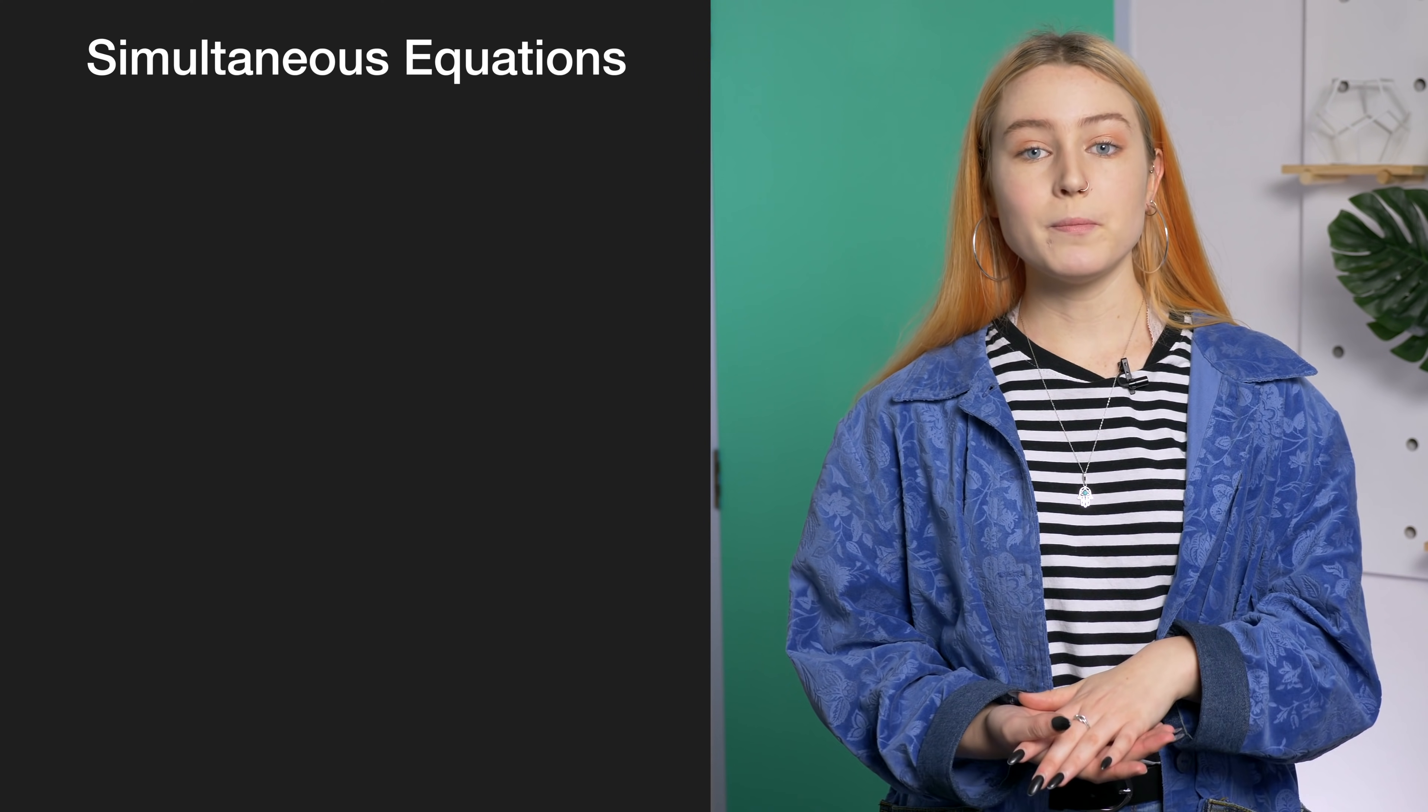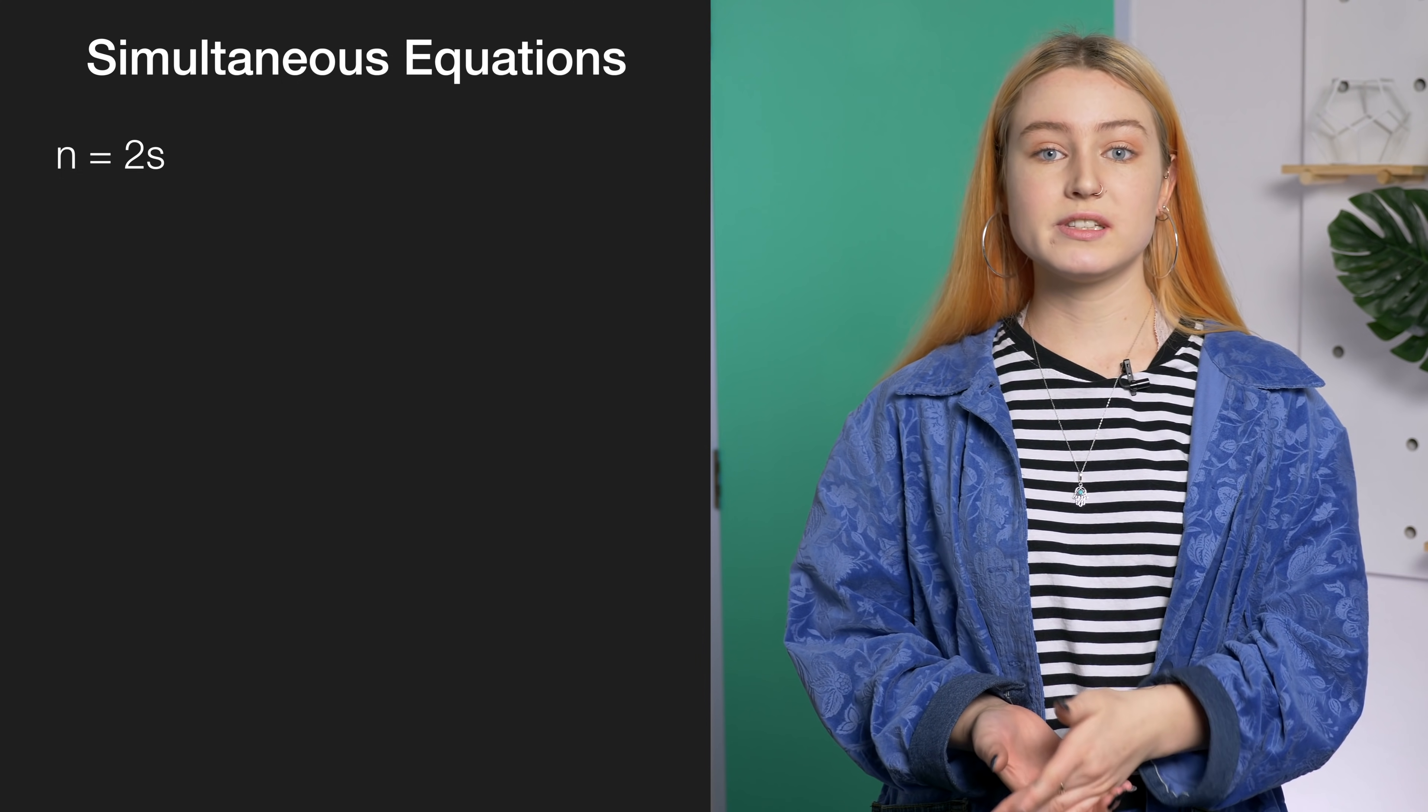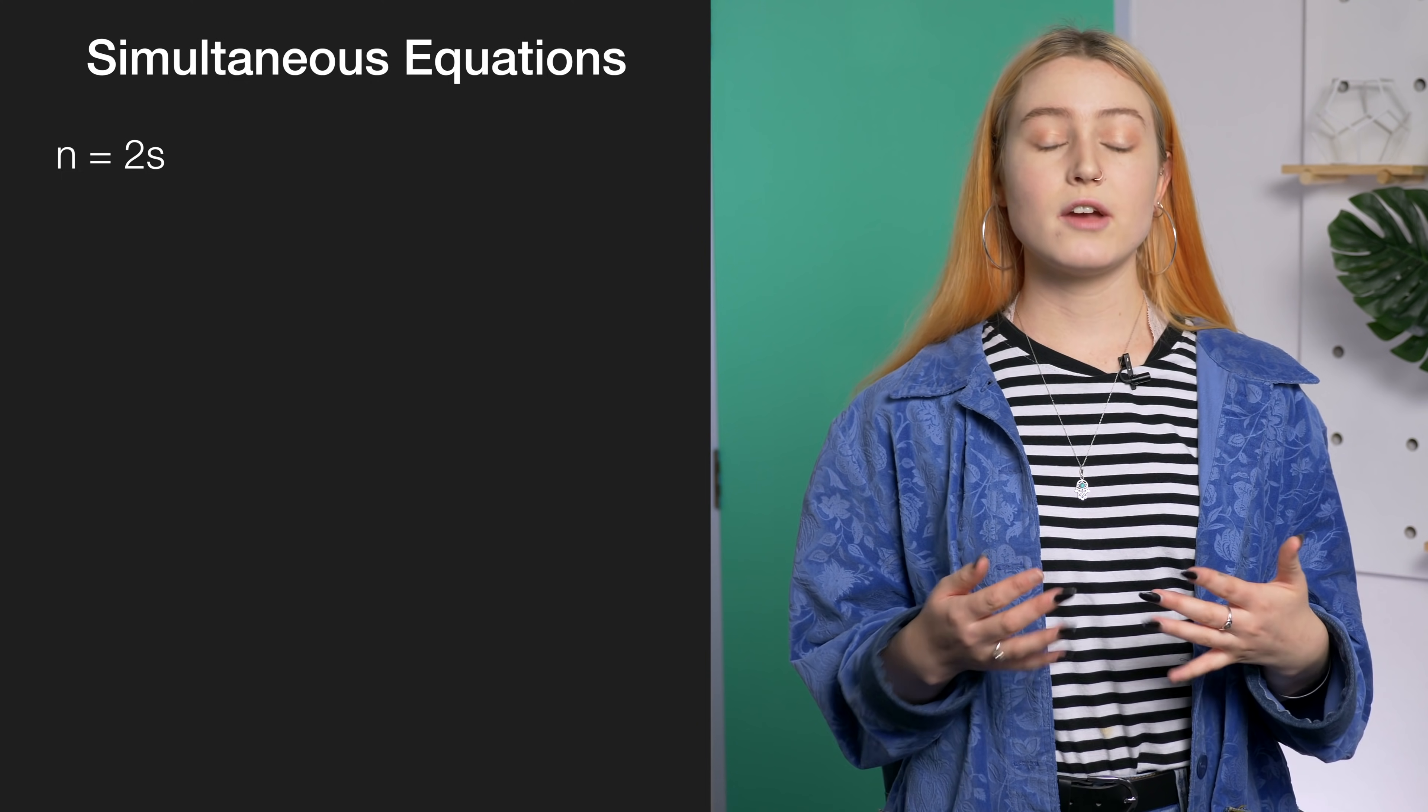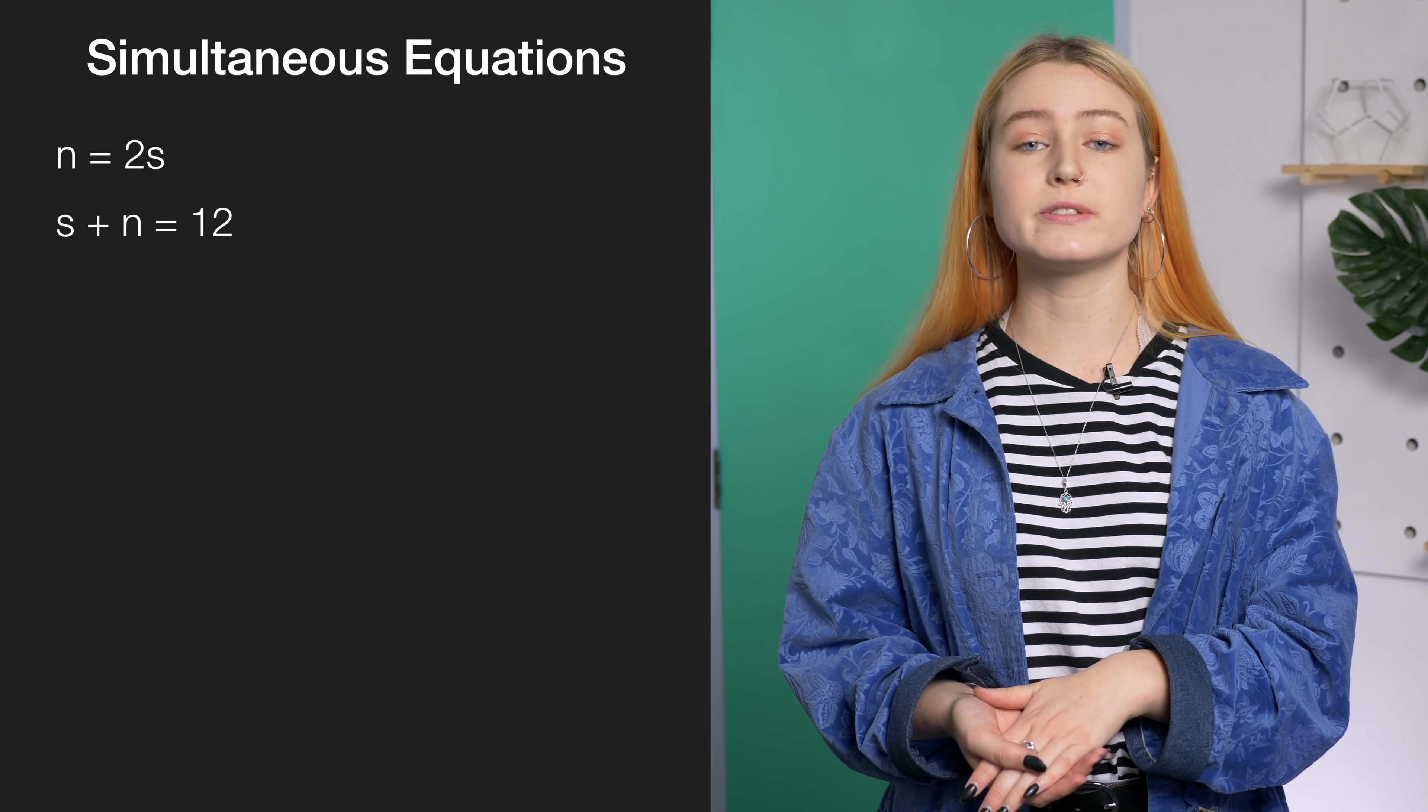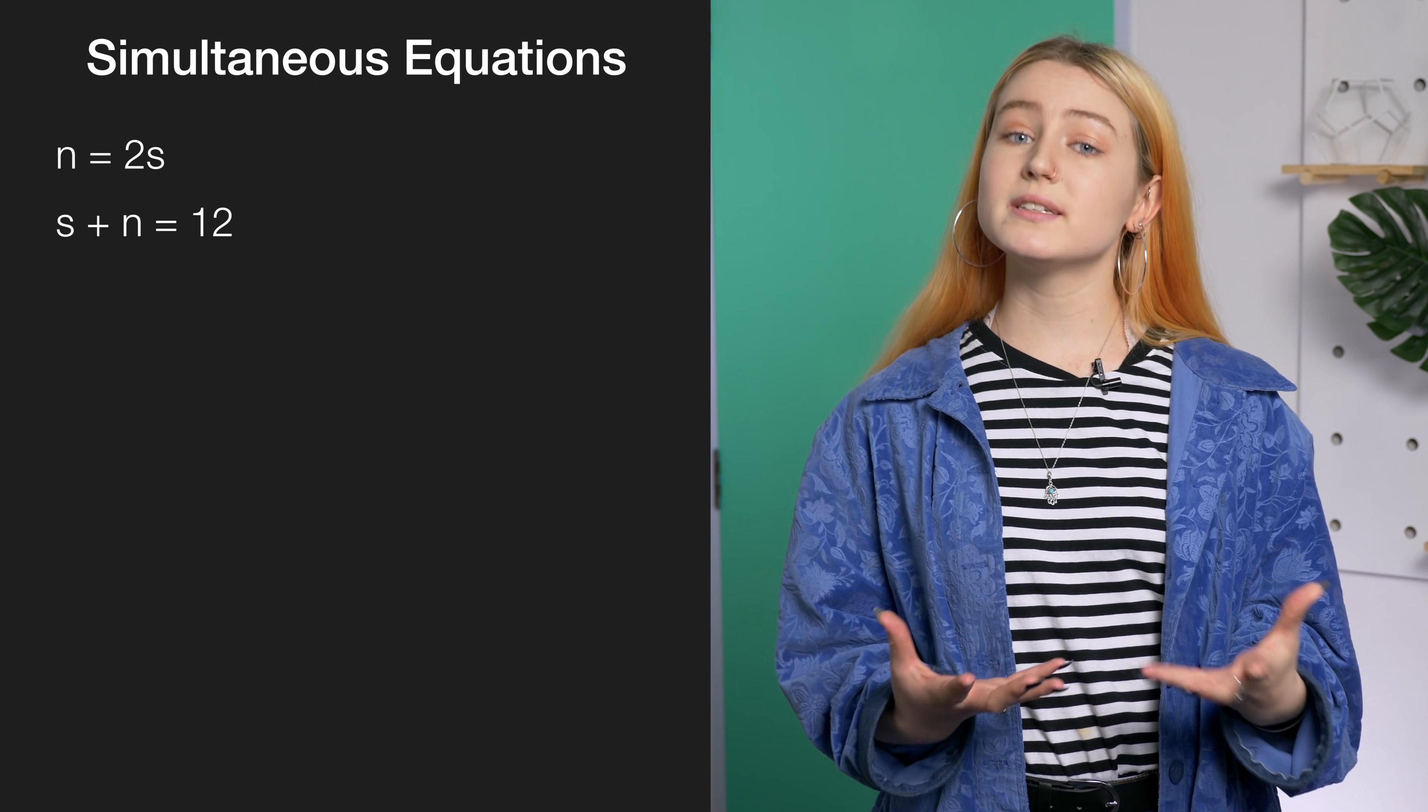One of the more straightforward merit and excellence style questions is that of simultaneous equations. If we go back to our example with Lucy and studying we already have one equation which is n equals 2s. If we're then given more information such as Lucy spends a total of 12 hours both studying and watching Netflix we then have two equations with the same variables both n and s. By this we can use the substitution method to solve the equation. If you can use this method and practice it really well it's some easy points in the bank.